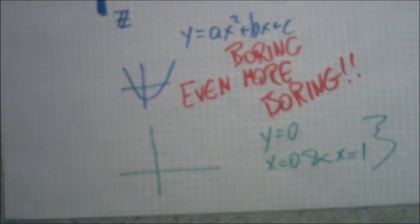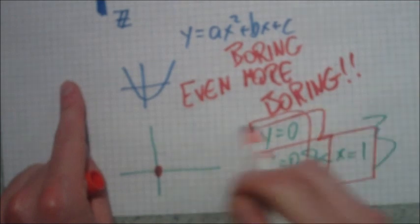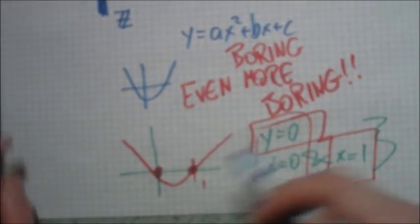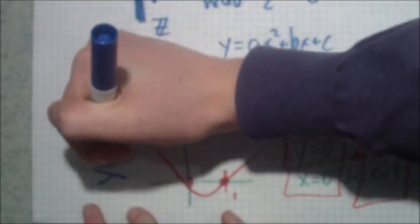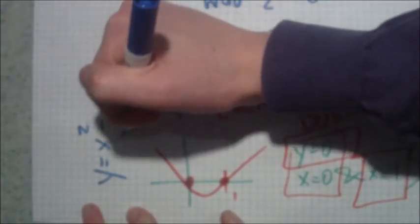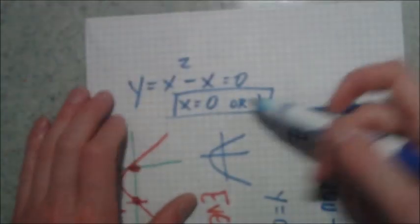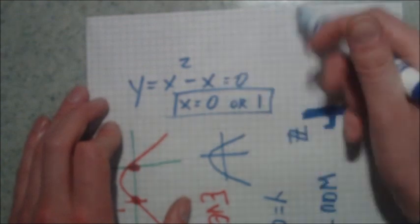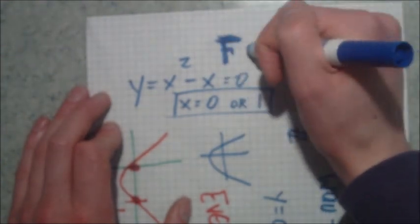One way that we can find two different values for a single function is to simply have the same value of y but different values of x. So we can plot those points, find the lines, and then you could use your grade school algebra to figure out the points. The points are in fact x equals zero and y, and we can use this equation x squared minus x, which has solutions wow.